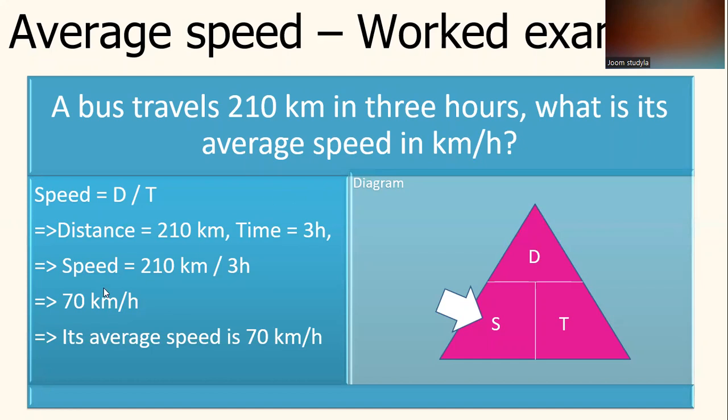So how to get the speed? Based on the formula, distance, 210 km divided by 3 hours. You get the answer, the speed that the bus travels is 70 km per hour. So its average speed is 70 km per hour.